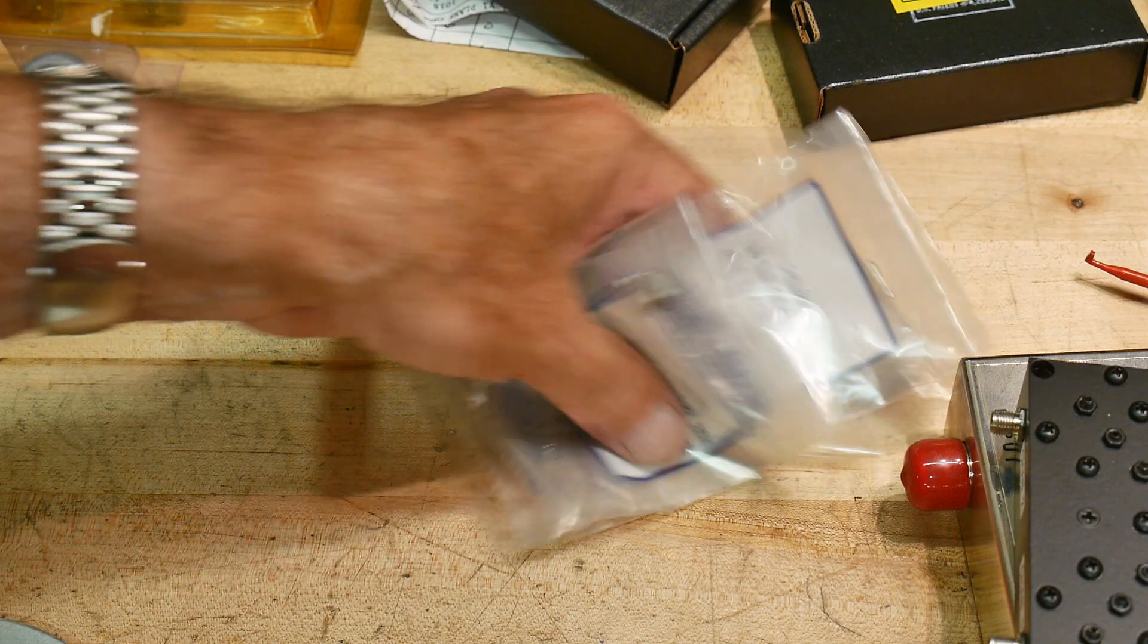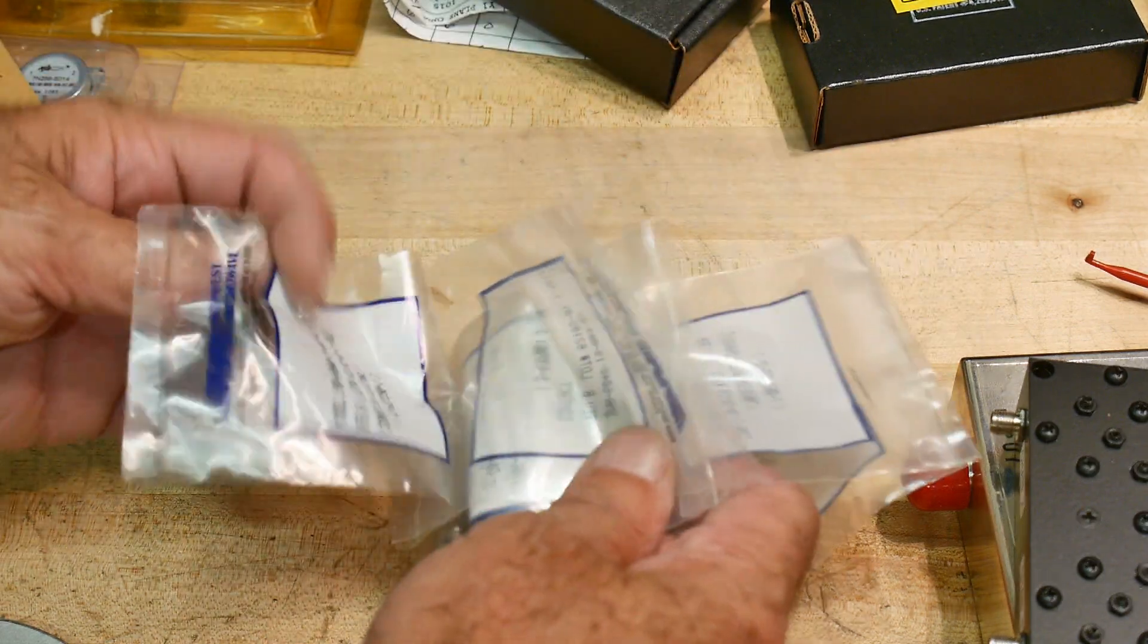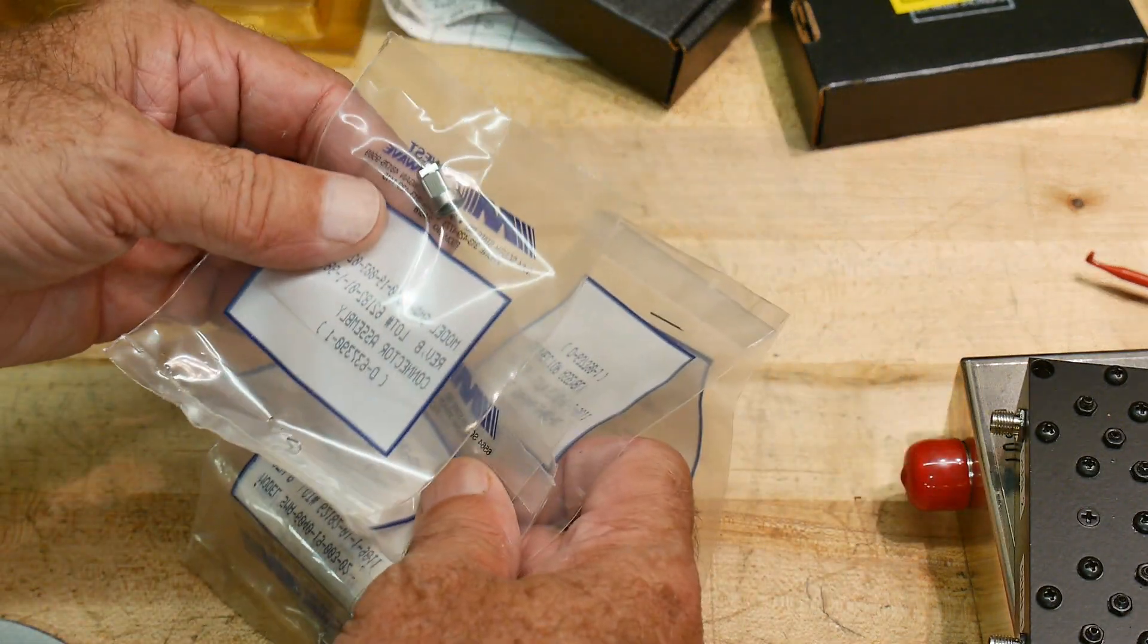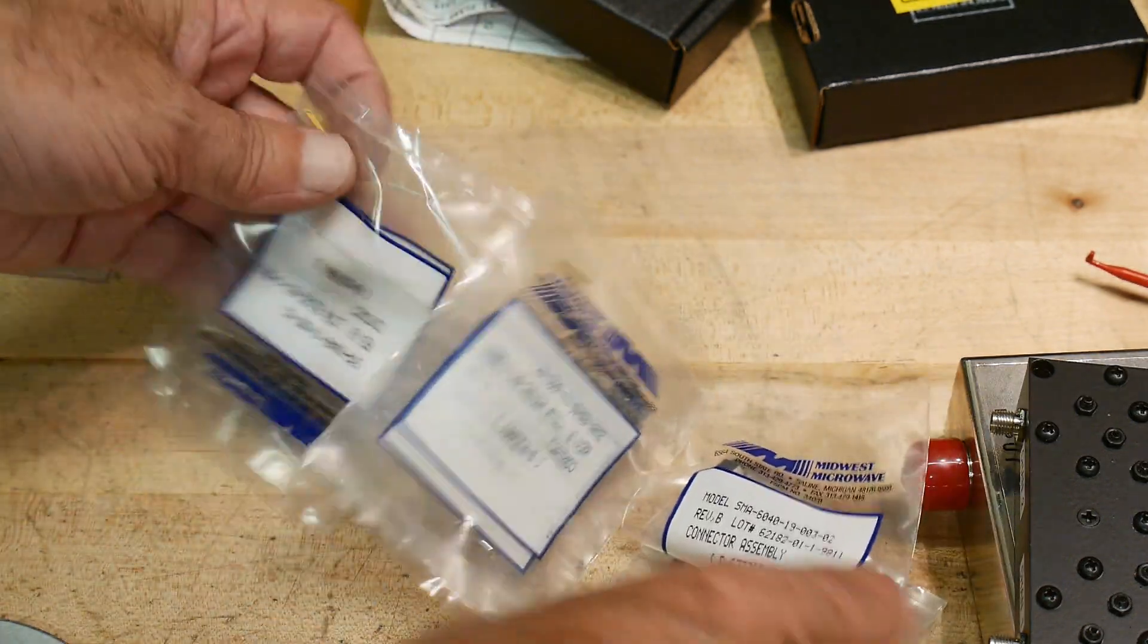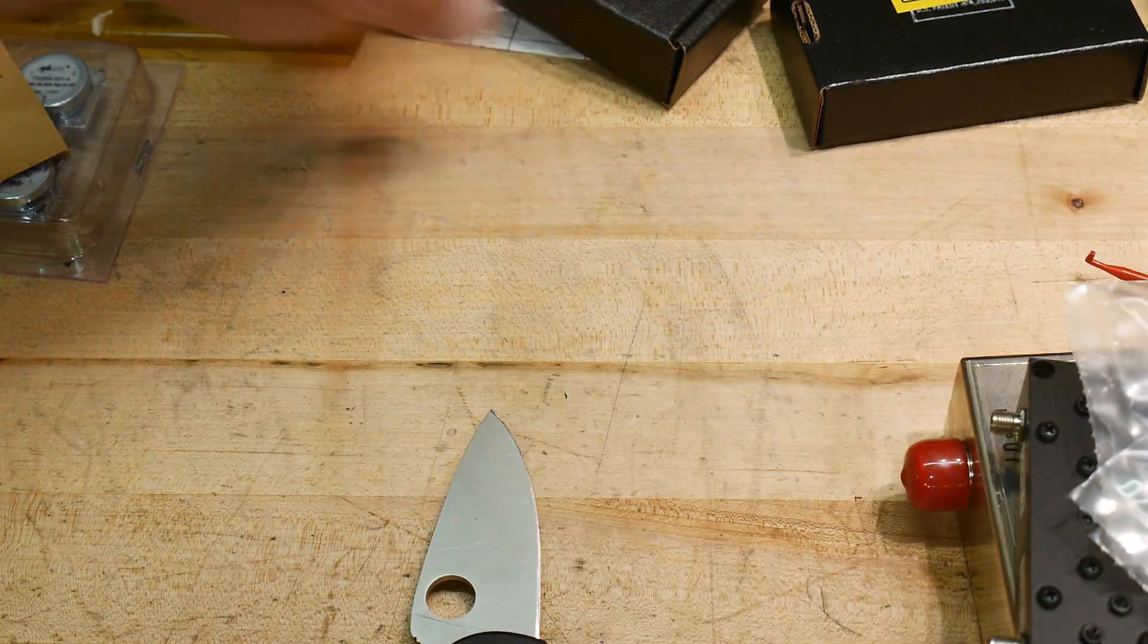He gave me some connectors. These are Midwest Microwave. Big brand name. These are nice SMA connectors for putting onto a cable. So I can make some nice cable assemblies with these.